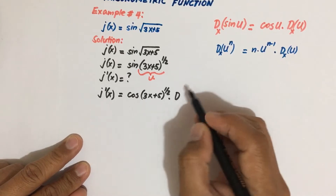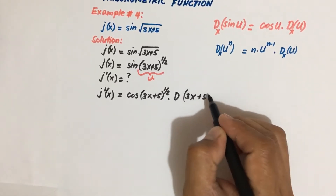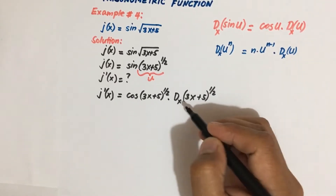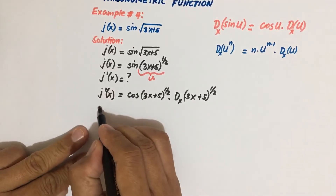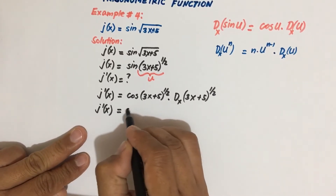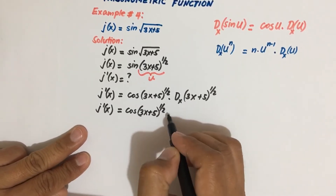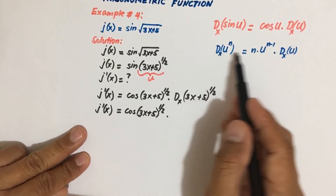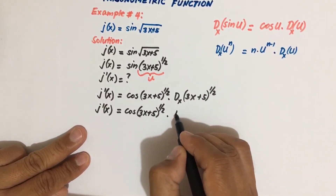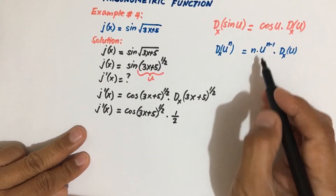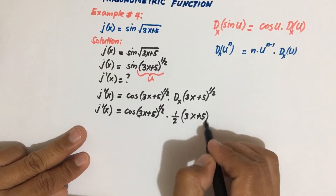So G prime of X is equal to cosine of 3x plus 5 raised to power one-half, times the derivative of u. Our u is 3x plus 5 raised to power one-half. Now we apply the power rule to this part: the power comes down, so we have one-half times u, which is 3x plus 5, to the power n minus 1.